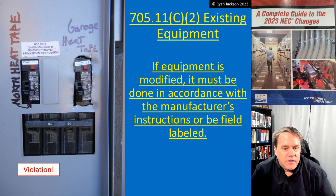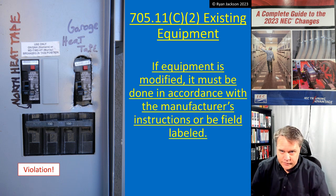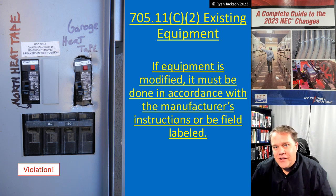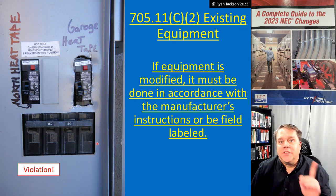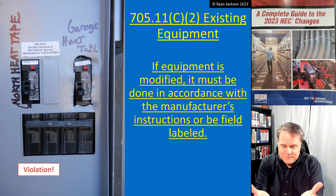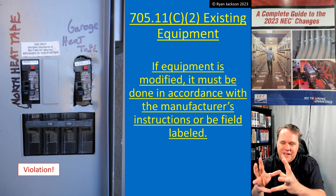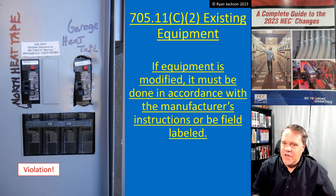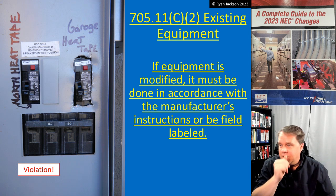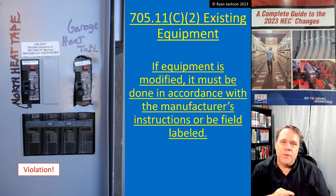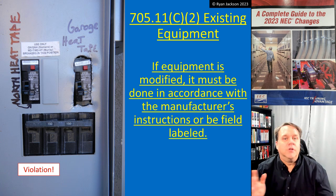If the service equipment is modified, it must be done in accordance with the manufacturer's instructions or be field labeled. Sometimes people get way too creative — for example, you can't just sawzall a new hole in a panel for your circuit breaker. Specialty inspectors are going to see a lot of this, especially with solar, because people try to fit existing equipment into new installations. If you have no instructions and you're modifying the equipment, you'll need to call a field evaluation body — like UL, Intertek, QPS, or TÜV — have them do a field evaluation, and if they sign off, they'll issue a field label and field evaluation report.